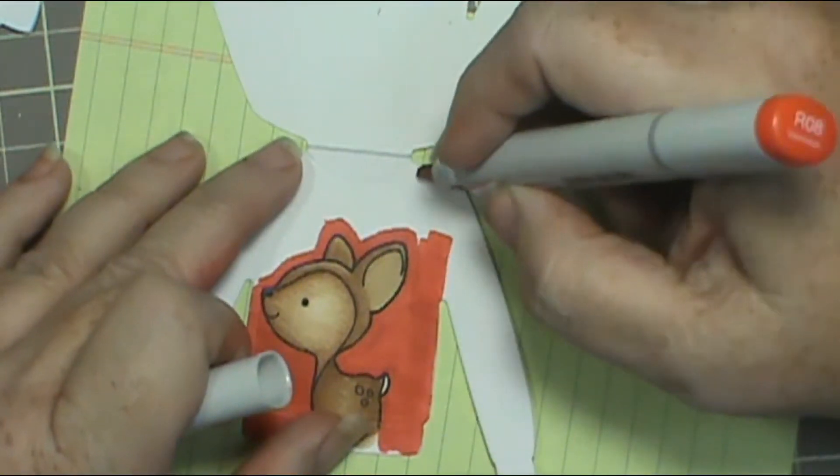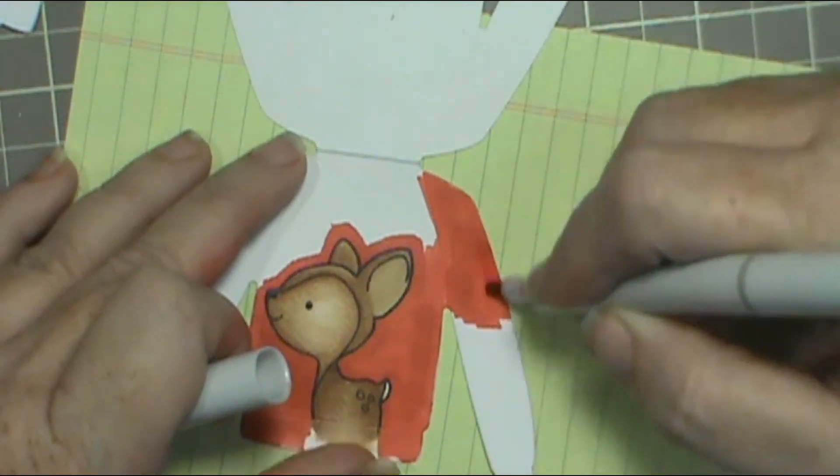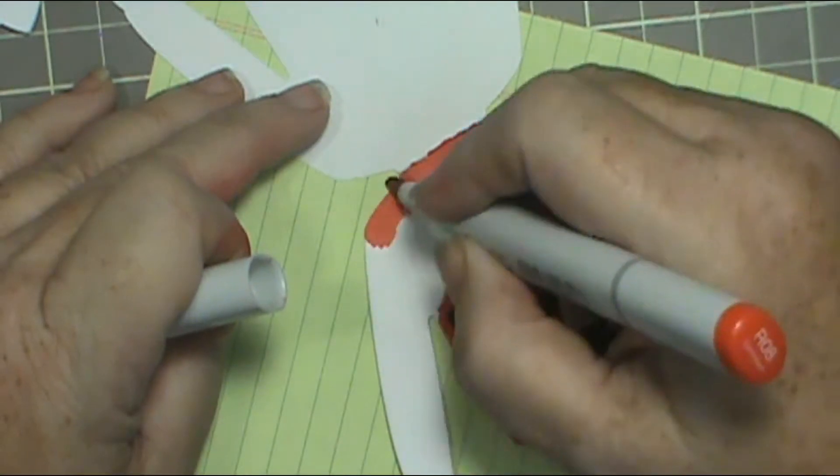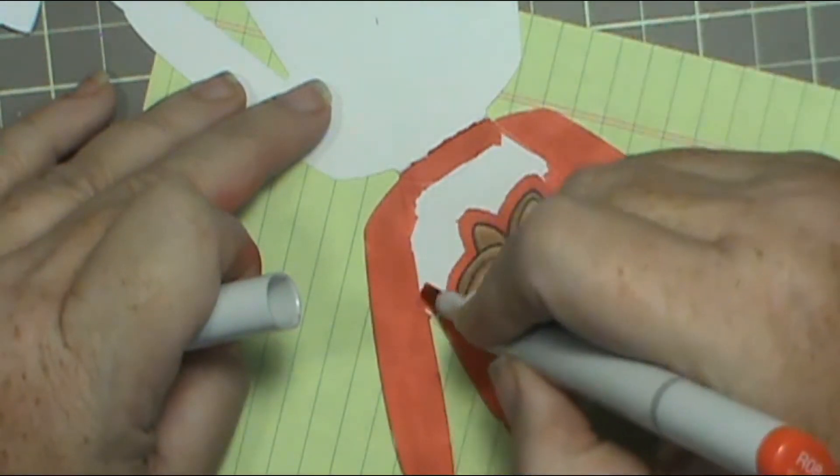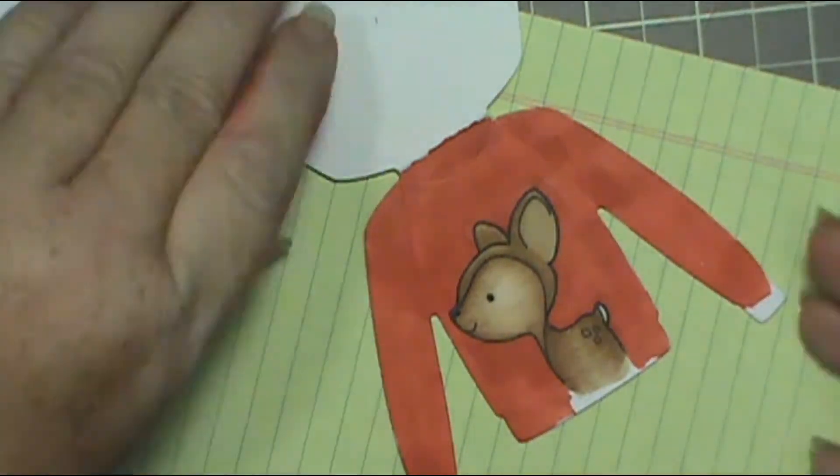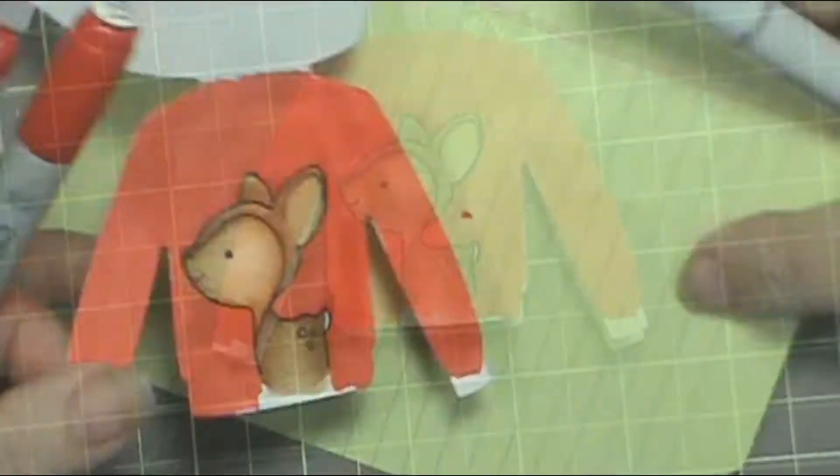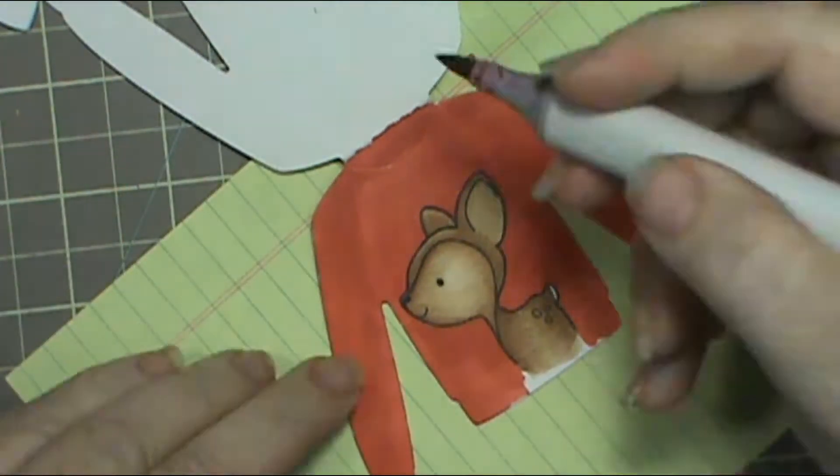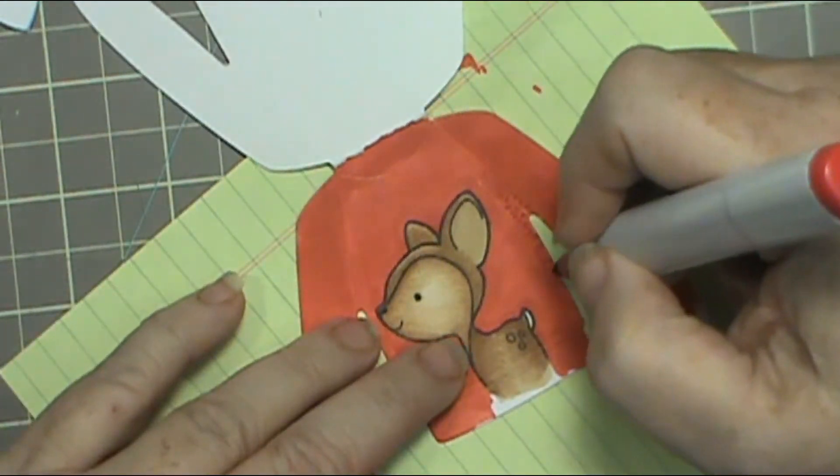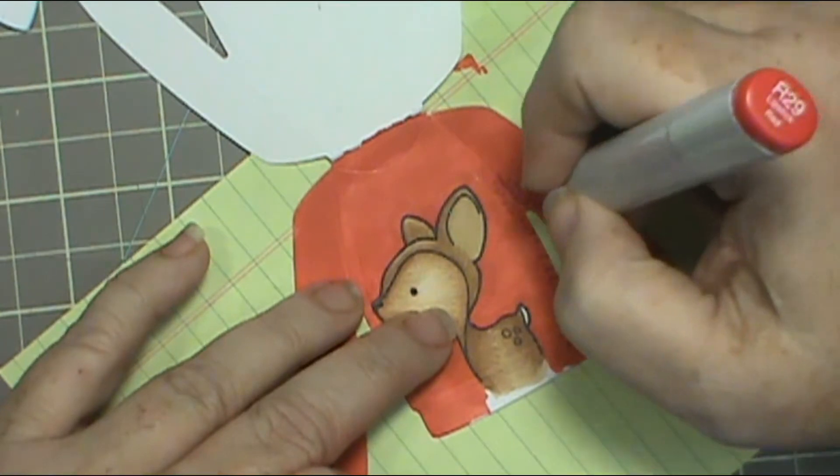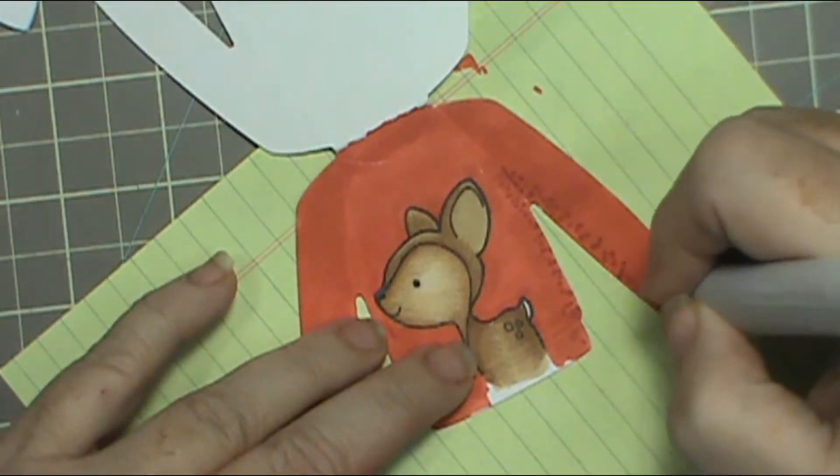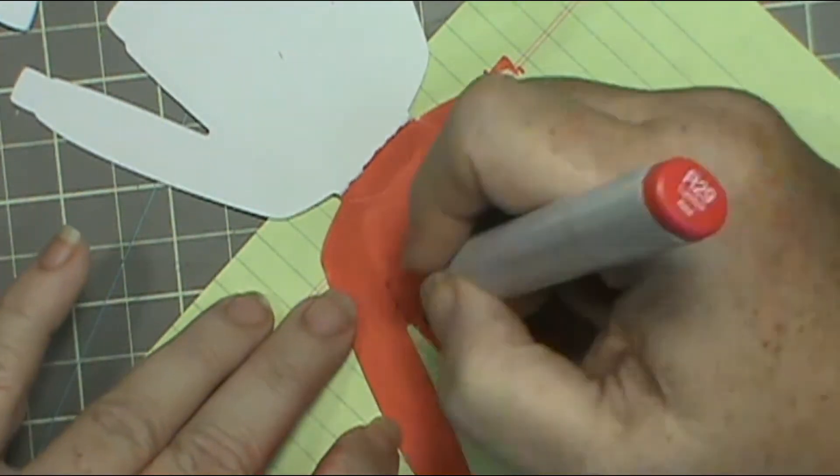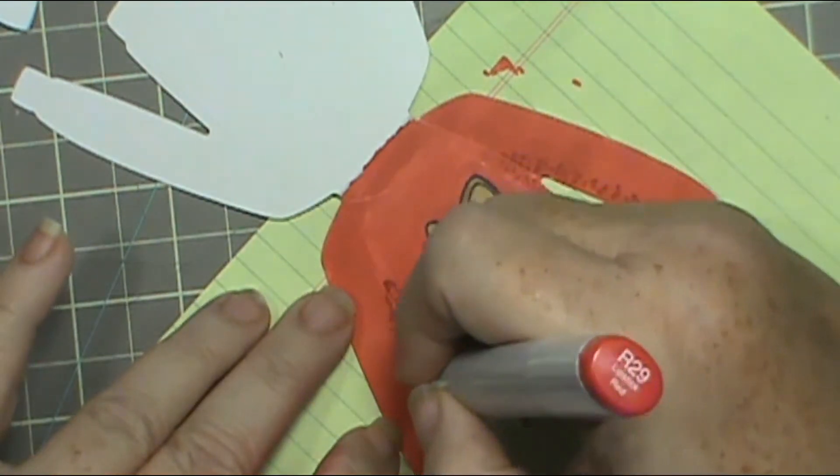For the sweater, I used R08, 27, and 29. On this one, I just put some little dots with the R29 and 27. And then I go over and just kind of lightly blend them out with the R08. That way it gives me a little bit of texture look to the sweater. This is one of my favorite ones. But the next one that you'll see, I loved it. Actually, there were so many, I just had so much fun.